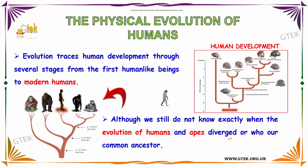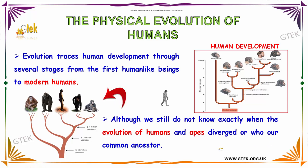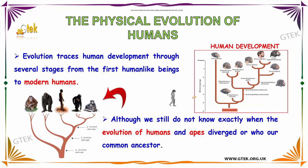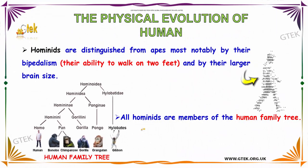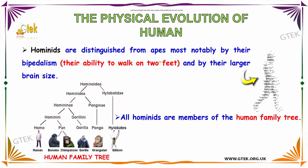Now let us talk about the physical evolution of humans. Evolution traces human development through several stages, from the first human-like beings to modern humans. Although we still do not know exactly when the evolution of humans and the apes diverged.